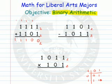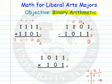How about a subtraction problem? I've made it a little difficult here because you have to trade. 1 minus 1 is 0. Now we have to take 1 from 0 — I can't do that. So I'm going to trade the 1 in, and for that I'm going to get a 10 over here. 10 minus 1 will be a 1. 0 minus 0 is 0. 1 minus 1 is 0.